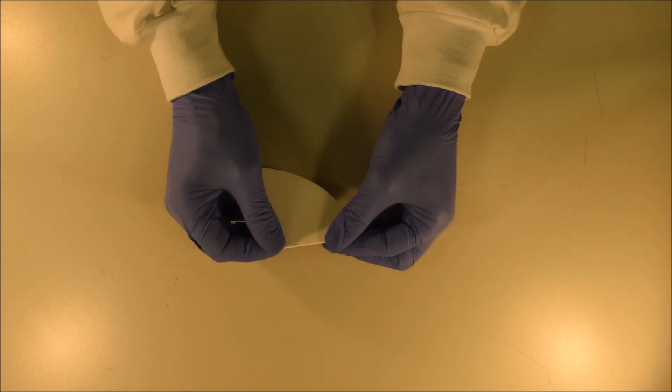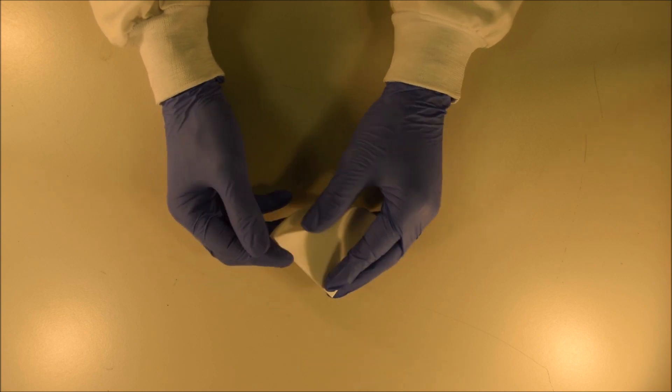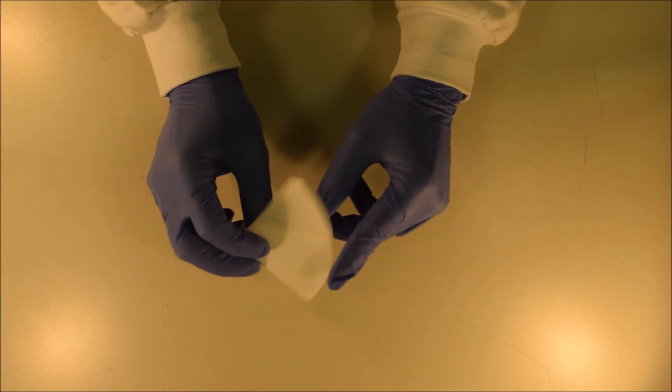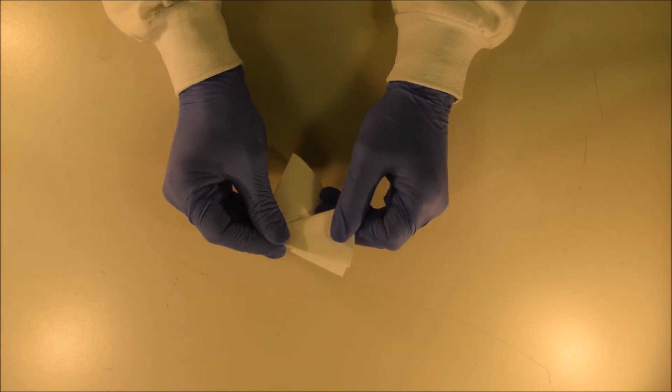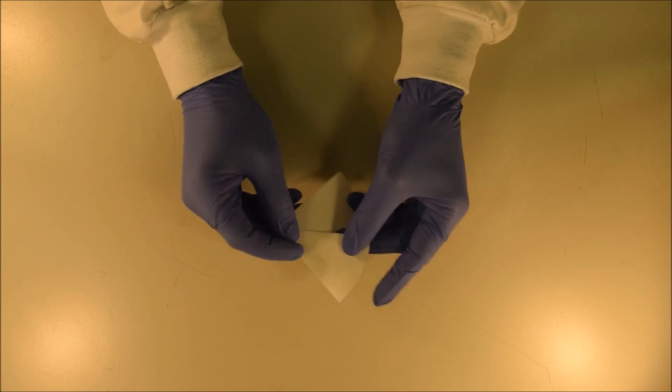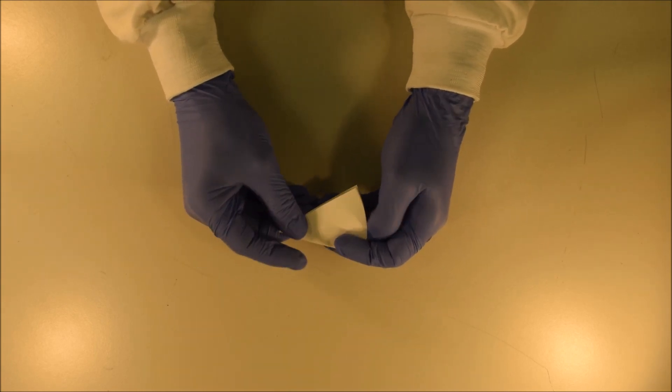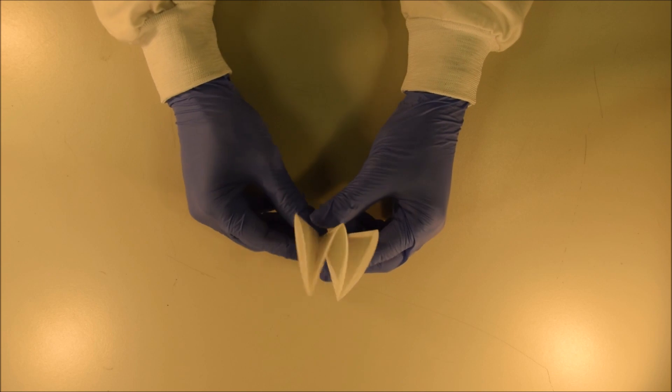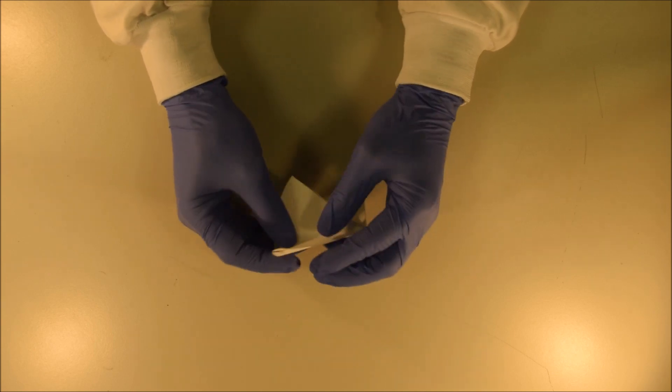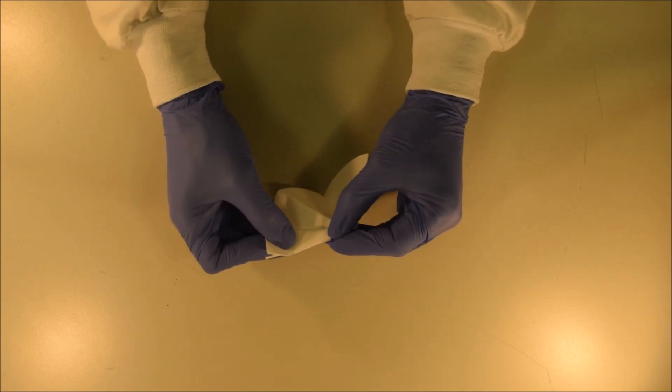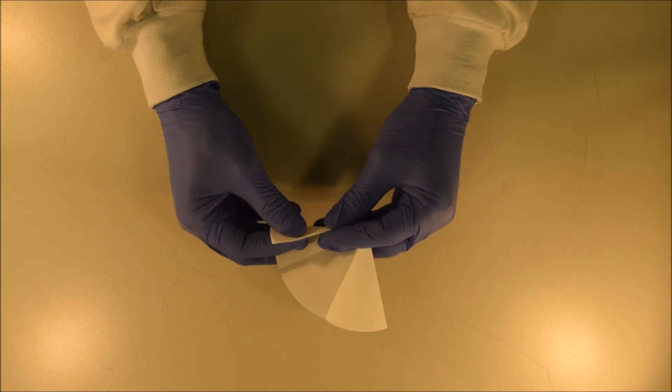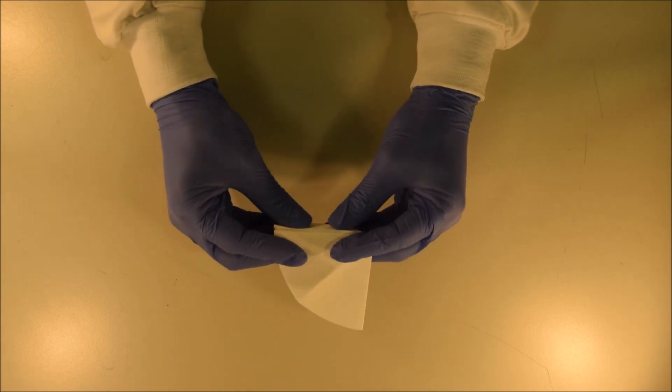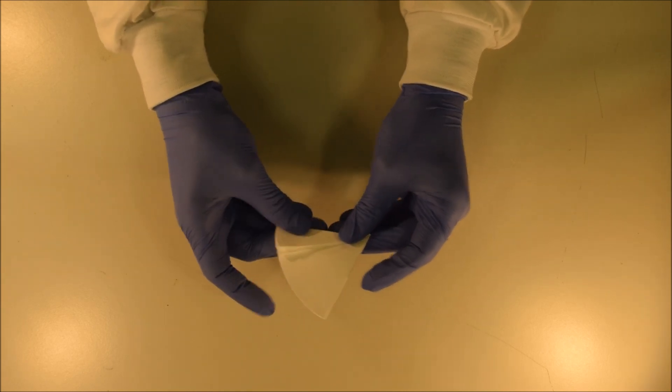Again, fold one of the quarters back into an eighth, like so, and then do the same in the mirror image on the opposite side. And what you end up with is something accordion like you see in front of you. Next, take one of the eighths and fold it back in itself, like so, to generate sixteenths. And then fold that back and forth and back and forth through.